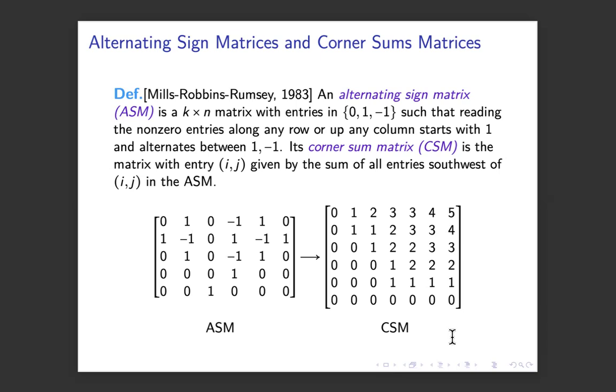So that's an alternating sign matrix. There's a whole book written on the topic. Lots of beautiful math come up in that. And Mills, Robbins, Rumsey already pointed out that for every alternating sign matrix, there's also a corner sum matrix.